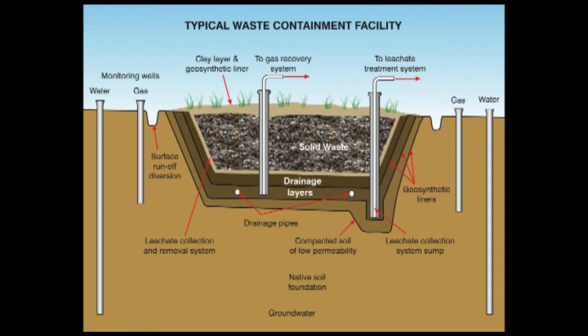Geosynthetic liners are then used on top of that layer. When the landfill cell is full, a capping layer is built over the top. This layer must control the amount of rainfall entering the system and control the exit of gas from the system. Liquid must not be allowed to accumulate inside. Gases are generated from the decomposing waste and must be able to escape.